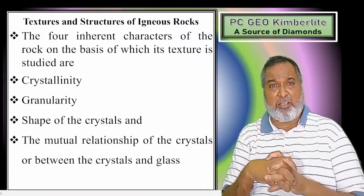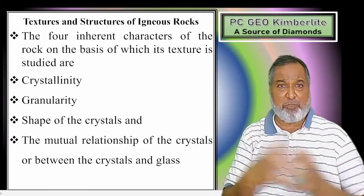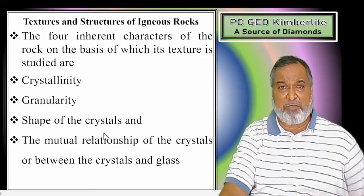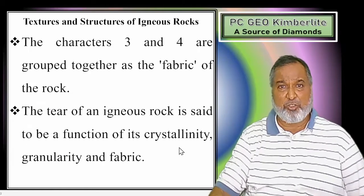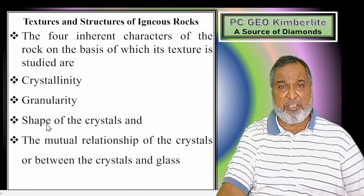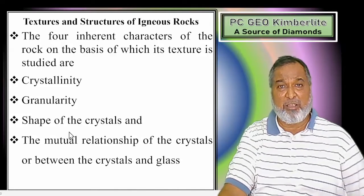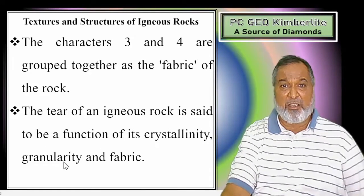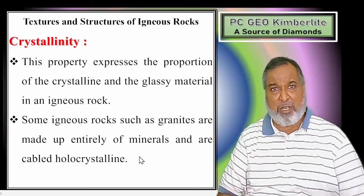Textures will be controlled by four factors: first, Crystallinity; second, Granularity; third, Shape of the crystal; and fourth, the mutual relation of the crystals and glass. These together make the fabric. The texture of igneous rock is said to be a function of its crystallinity, granularity, and fabric. So the texture will be defined by crystallinity, granularity, and fabric.